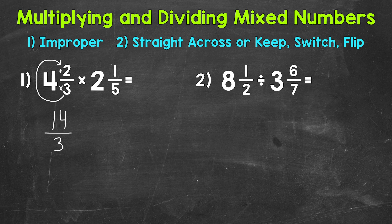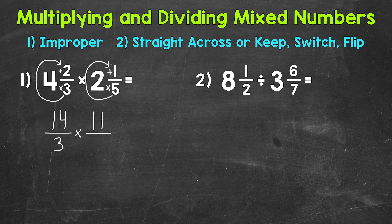Let's bring our multiplication sign down and then convert 2 and 1 fifth to an improper fraction. So we multiply and then add. 5 times 2 is 10, plus 1 is 11. So 11 is our numerator, and we keep our denominator of 5 the same.